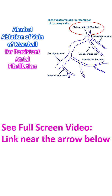It is anatomically related to the mitral isthmus, which is the region between the left inferior pulmonary vein ostium and the mitral annulus. The oblique Vein of Marshall is the residue of the embryonic left superior cardinal vein.